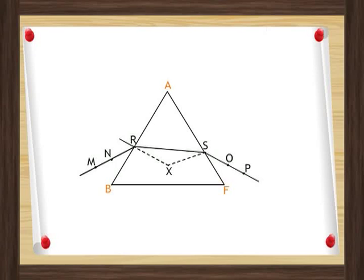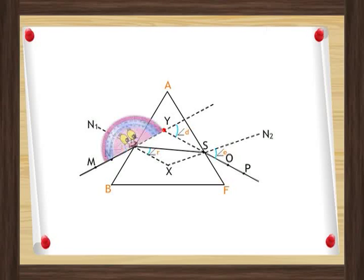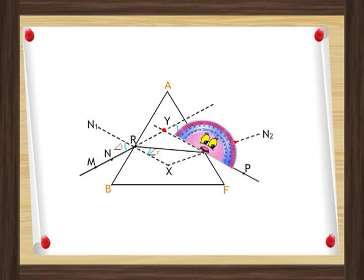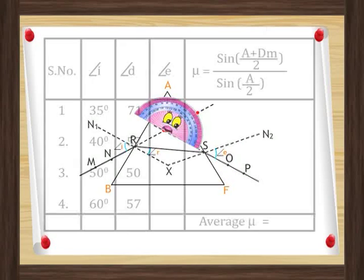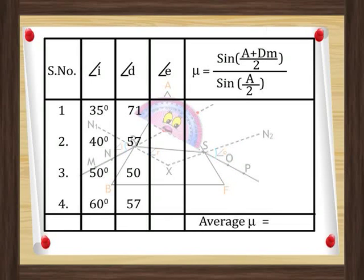The angle of incidence is the angle made by the line M, R with the normal N1 and the angle of emergence is the angle made by P, S with the normal N2. The angle made by M, Y and P, Y is the angle of deviation. Measure the angle of incidence, the angle of emergence, and the angle of deviation. Note the angles in a table.